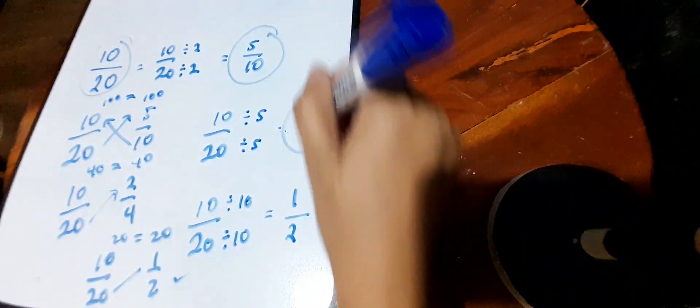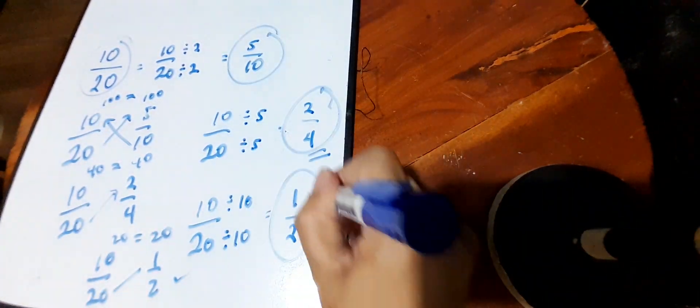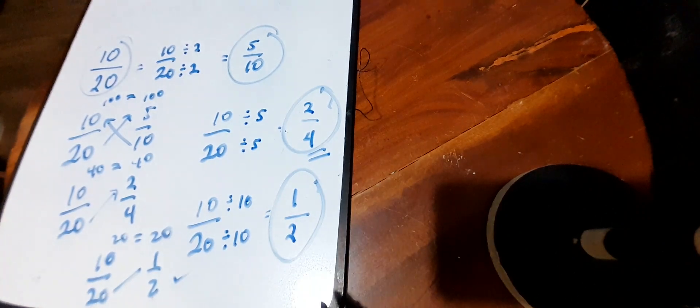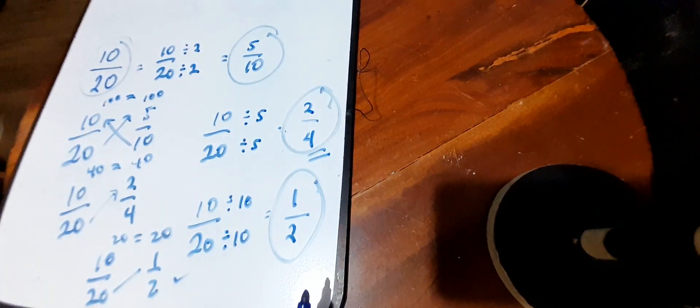So they get the same product. Ten over twenty, five-tenths, two-fourths, and one-half — these are all equivalent fractions.